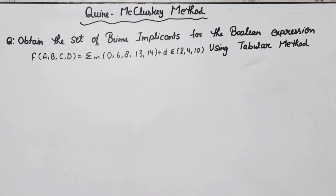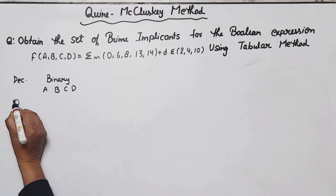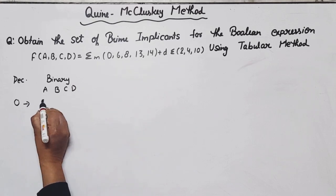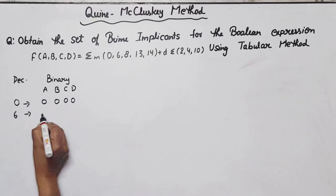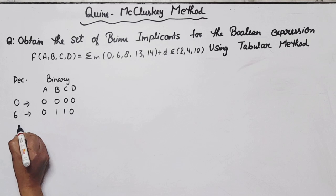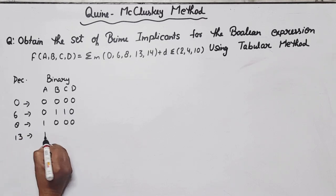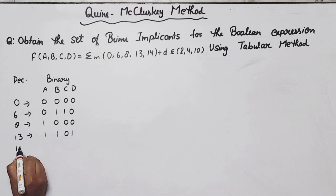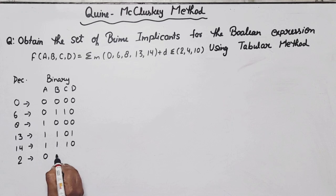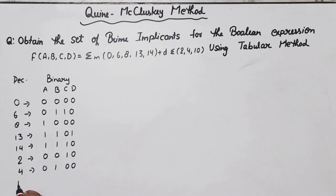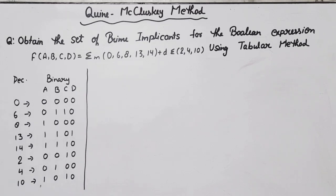First of all, whatever minterms are given, we will write them in decimal and then their binary equivalent. The minterms are: 0, 6, 8, 13, and 14. Now, the don't-care conditions will also be treated as minterms: 2, 4, and 10. So these are our numbers — decimal to binary.